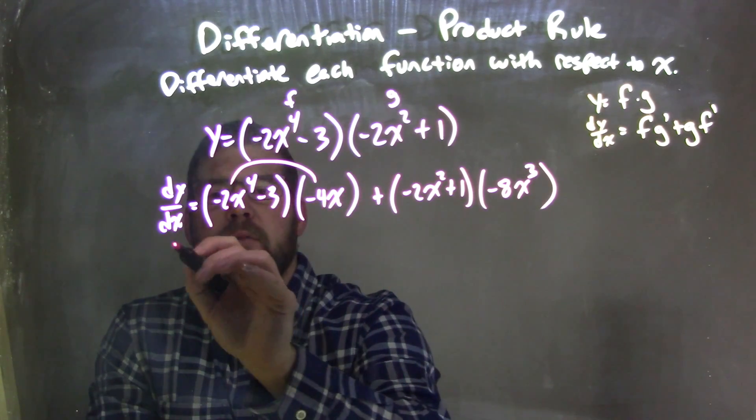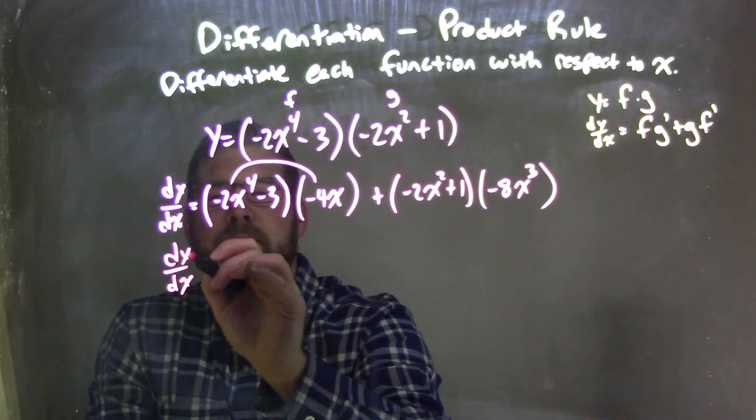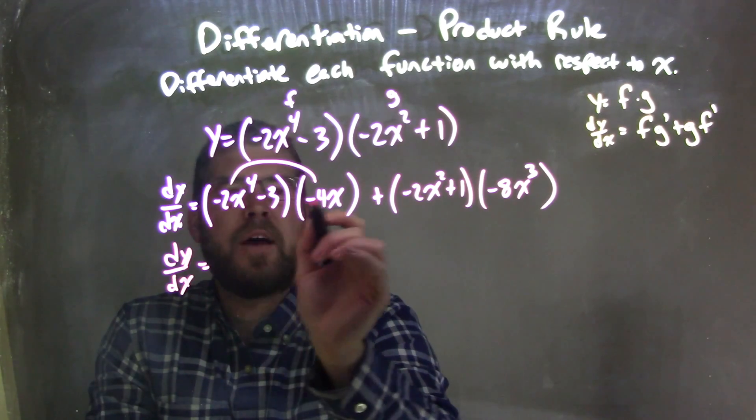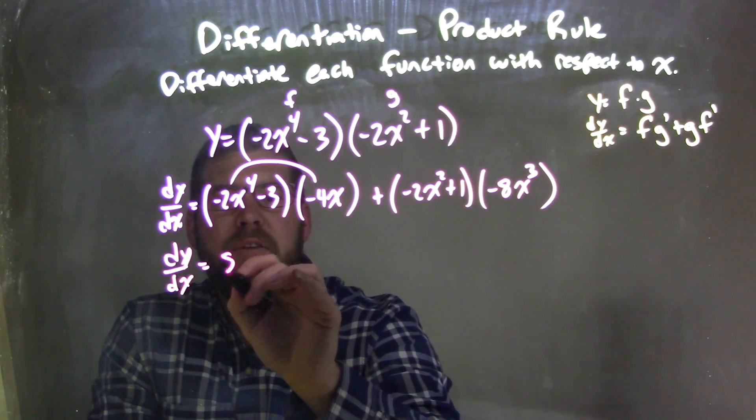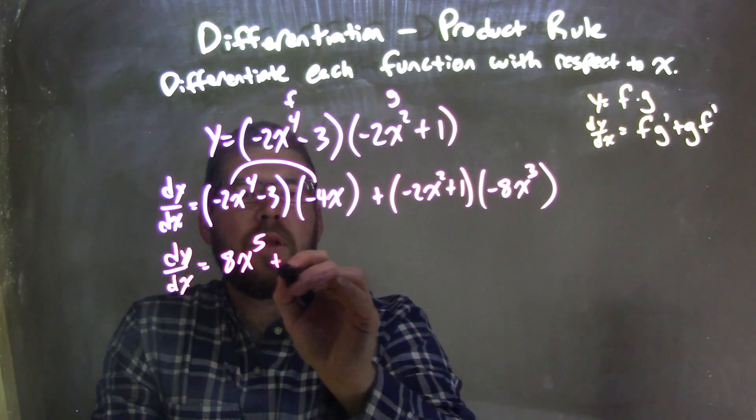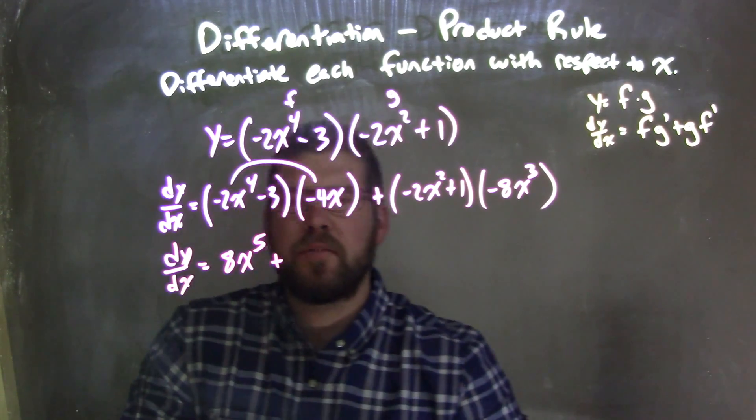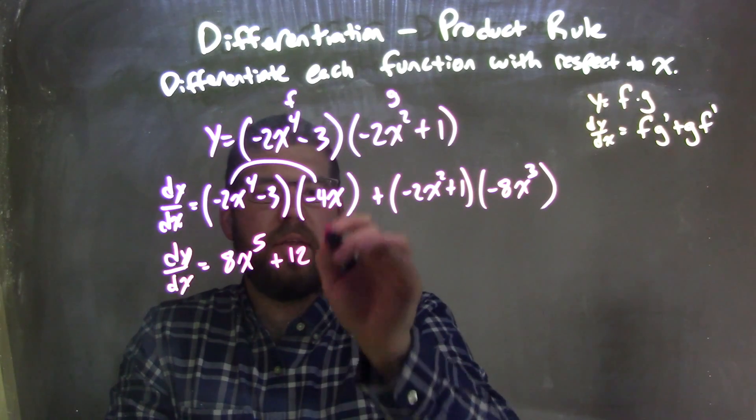So we multiply the negative 4x. We have dy/dx here. Multiply the negative 4x out, negative 4x times negative 2x to the 4th is a positive 8x to the 5th, plus negative 4 times negative 3 is a positive 12x.